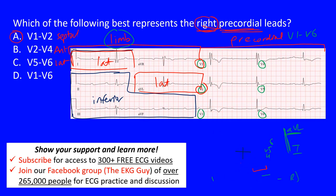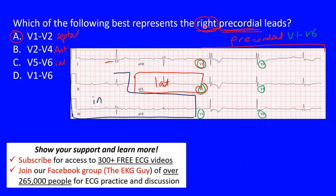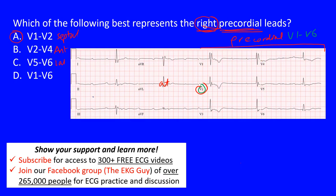To summarize: V1 and V2 are the right precordial leads, and again some sources include V3 as well. You may also hear them referred to as the septal leads. This is really important when you start trying to identify different infarcts.